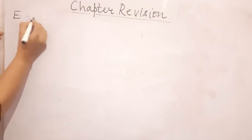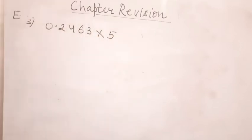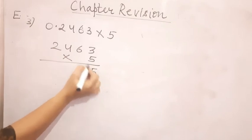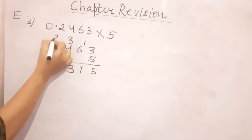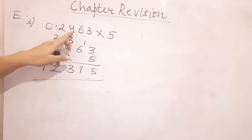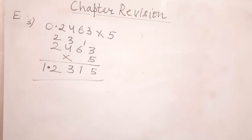Question number three is 0.2463 multiplied by 5. As I told you, whenever you multiply decimal numbers by whole numbers follow the standard multiplication process: 2463 multiplied by 5. So: 5 threes are 15; 5 sixes are 30, 31; 5 fours are 20, 23; 5 twos are 10 plus 2 is 12. Now count the decimal places after the decimal point: 1, 2, 3, 4 — there are 4 decimal places. So from the extreme right count 4 digits and place the decimal point. The final answer is 1.2315.